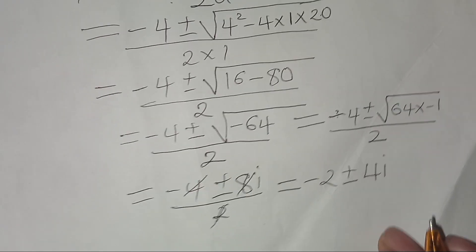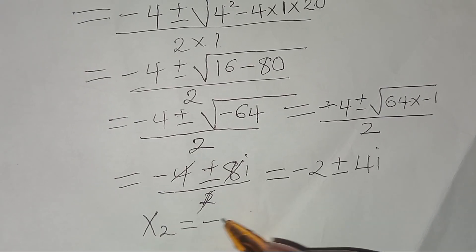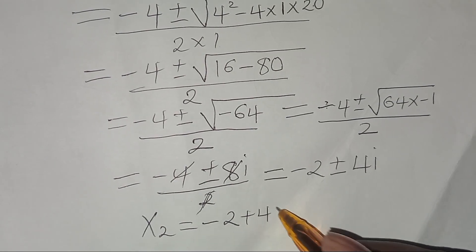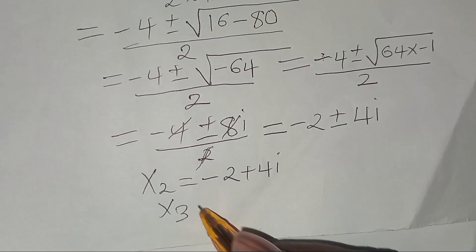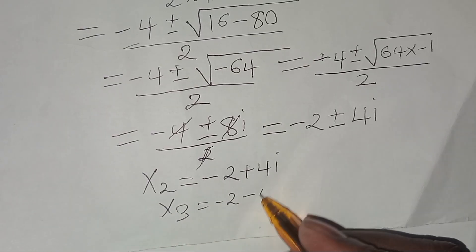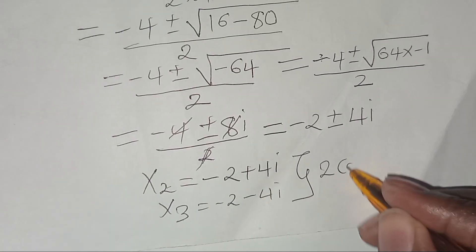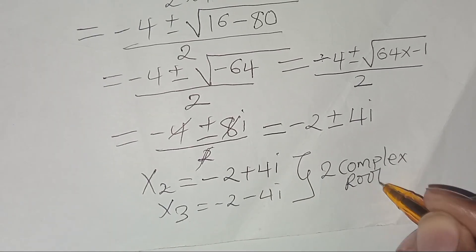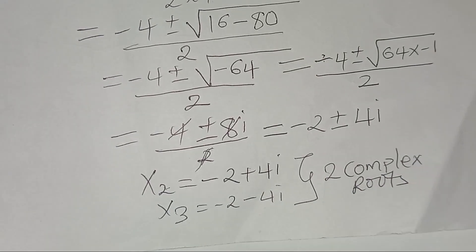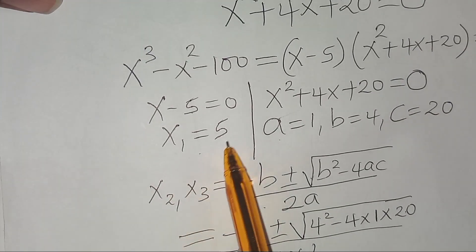So x2 equals negative 2 plus 4i, and x3 equals negative 2 minus 4i. These two values x2 and x3 are complex roots, and they cannot give us a real solution. Therefore the only real root is x1, which is equal to 5.